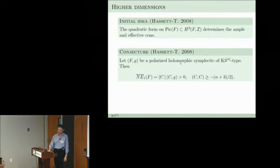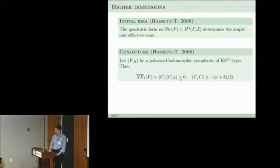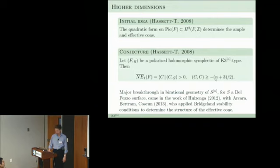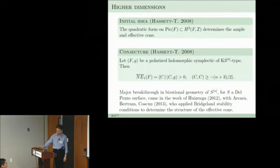We collected examples in higher dimensions and instead of minus 5/2 we found minus (n+3)/2 as the most negative class we could obtain. The initial conjecture was: if you have a polarized holomorphic symplectic variety then an effective curve intersects the polarization positively and has square bounded below by minus (n+3)/2. For n=1 this is minus 2, then minus 5/2, and so on. Analyzing and proving this in higher dimensions was hard, but there were major breakthroughs in birational geometry analyzing effective cones of Hilbert schemes of points on del Pezzo surfaces like P2.